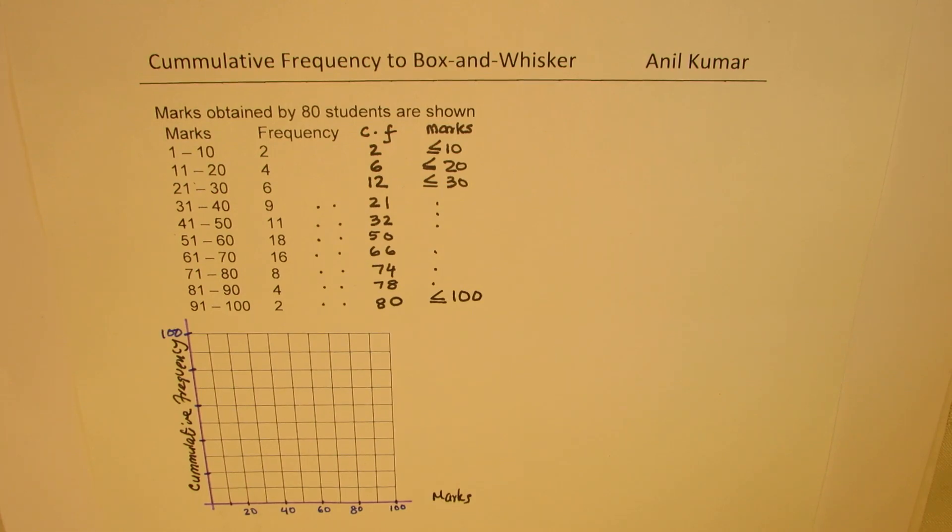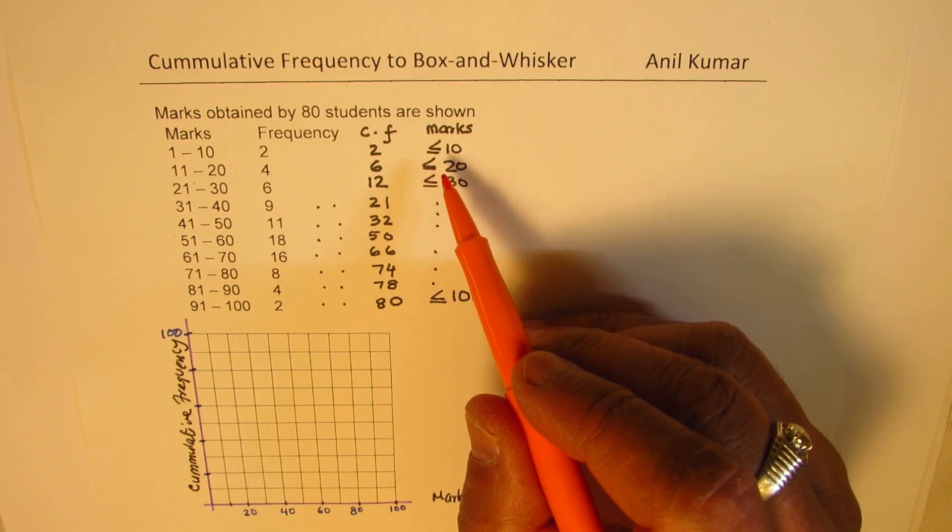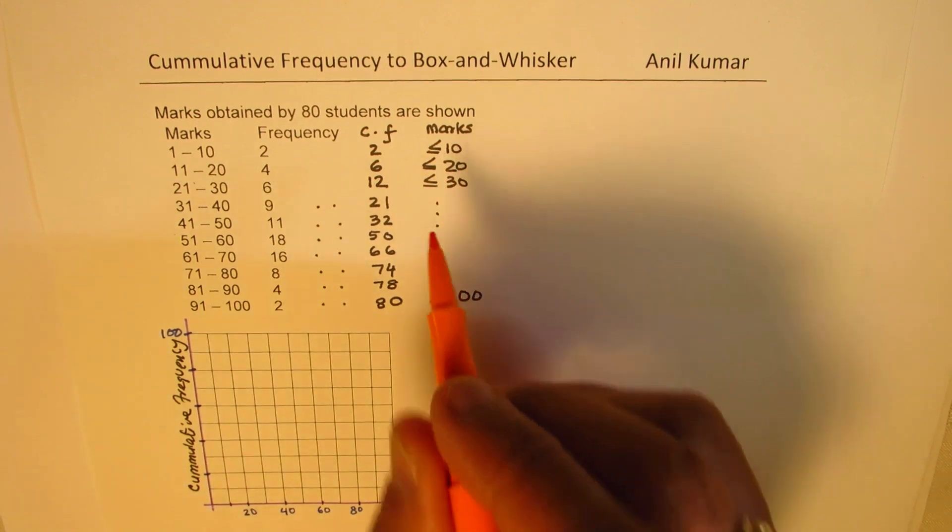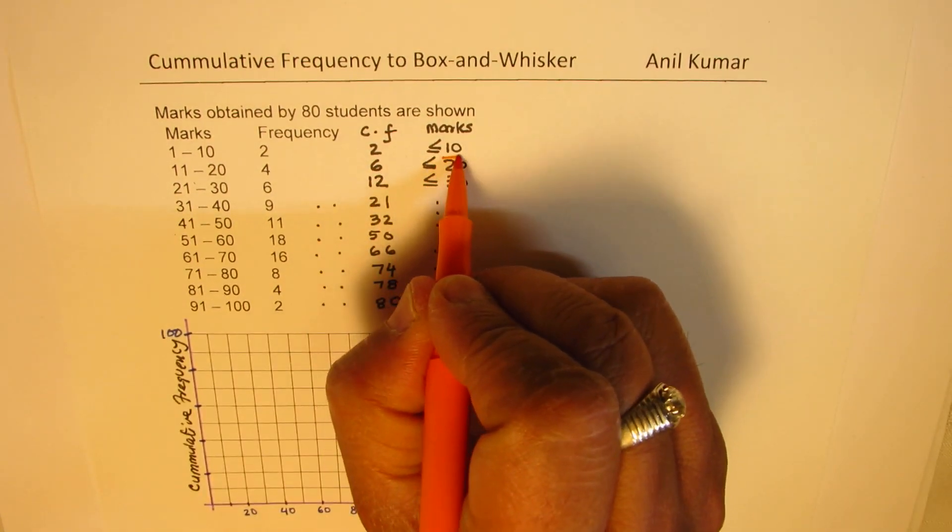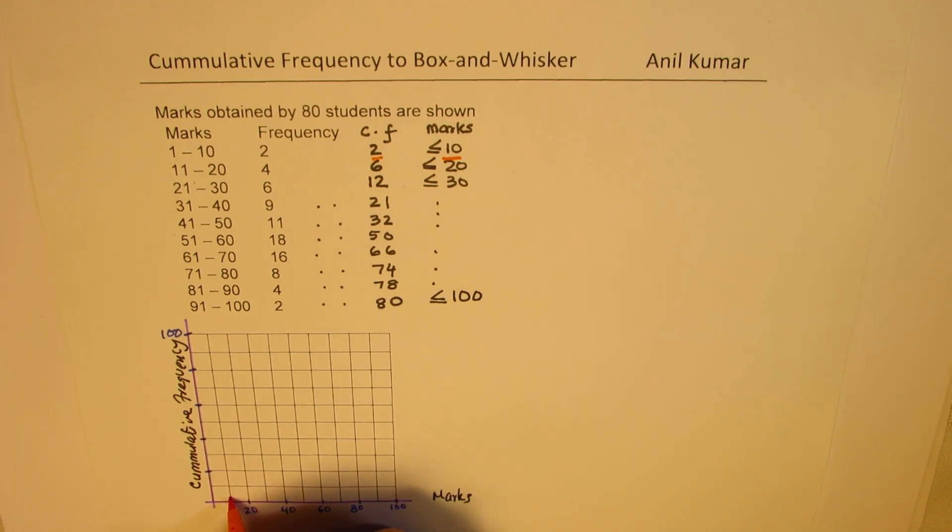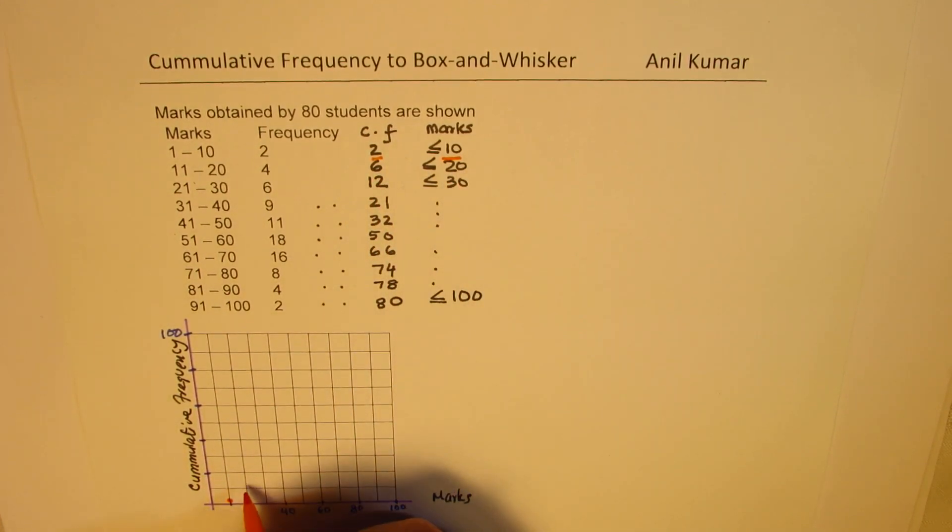First step is, let's plot these points. We always mark this point at the maximum. The points in the graph are plotted at the upper limit. This is less than or equal to 10. So, 2 will be at 10. At 10, we'll have this point, which is 2. Now, each mark is 10 here. So, 2 will be kind of, let's say like this. That becomes our first point. And then, we have 6 for 20. 6 for 20 is slightly more than half. This is 10. So, let's say that is 6 for 20.